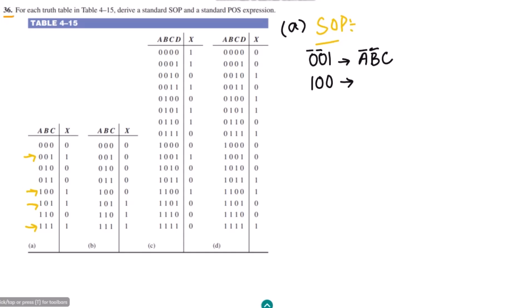For the second term 100, I will have to make B and C complement, so I will have A, B complement, C complement. The third one is 101, so in order to make it 1 I will have B complement, giving A B complement C. The last one is 111, which is already all 1s, so I will have A, B, C.